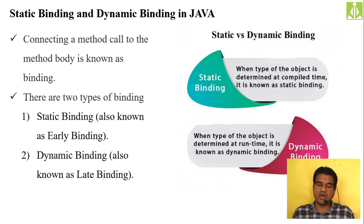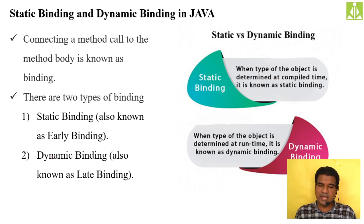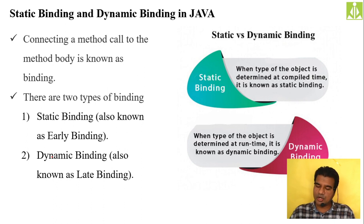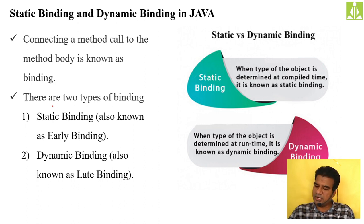Next we have the concept of static and dynamic binding in Java. First we need to understand what binding means. Binding is something related to executing a method definition — to execute a method definition you call that method. When the compiler sees a method call, it immediately goes to the body or definition of that method and executes it.